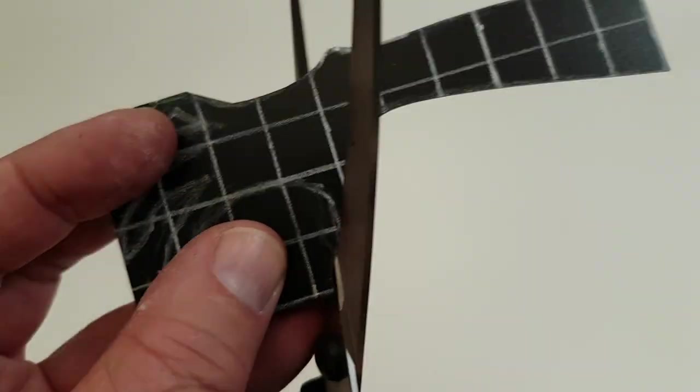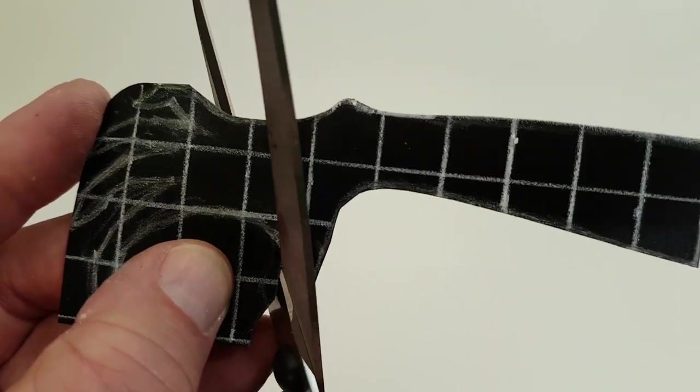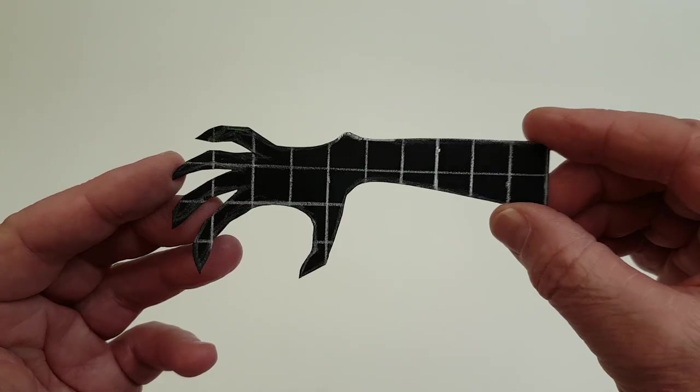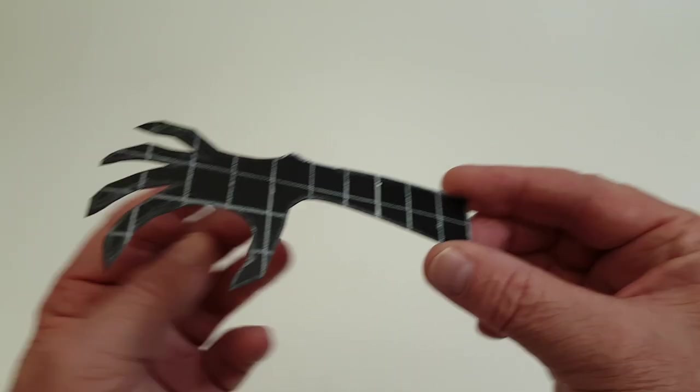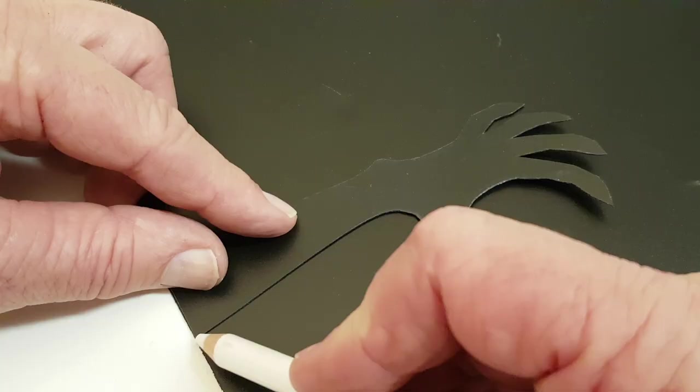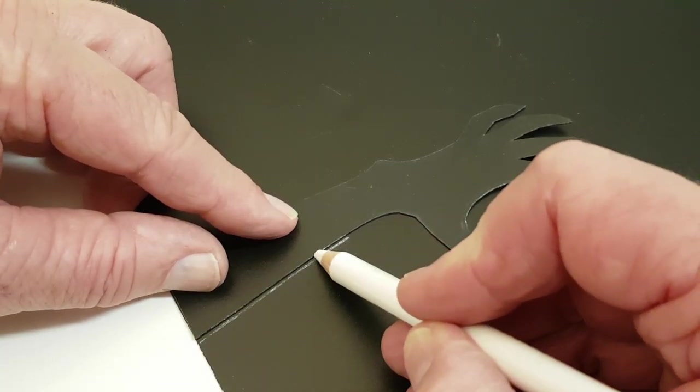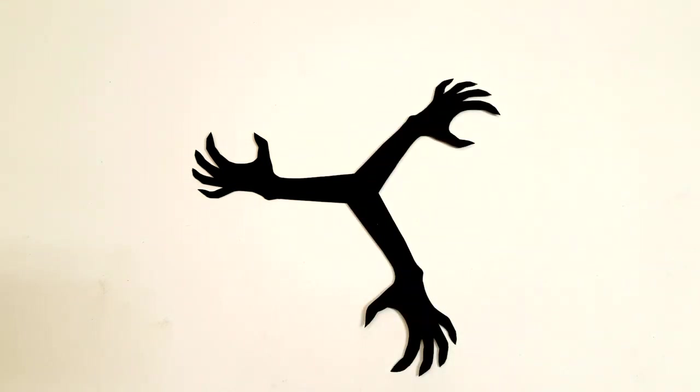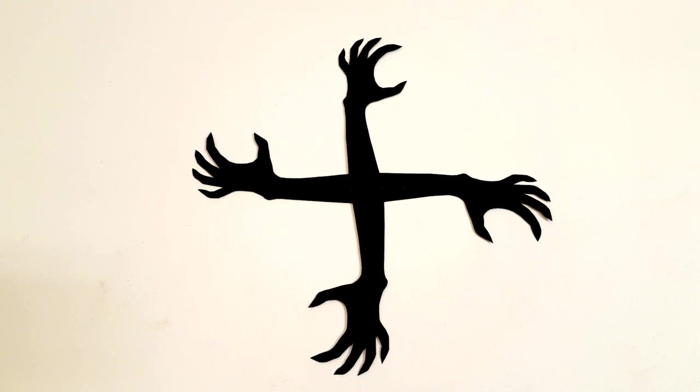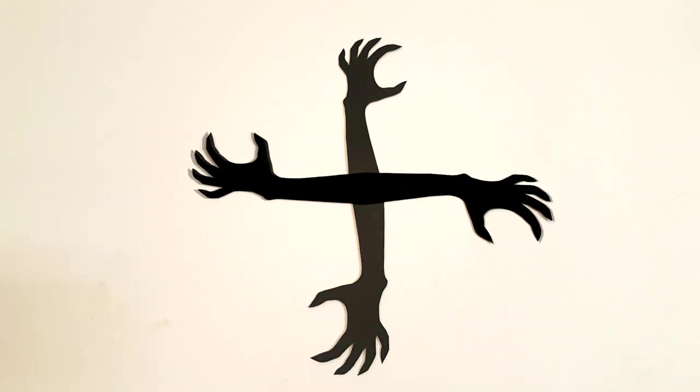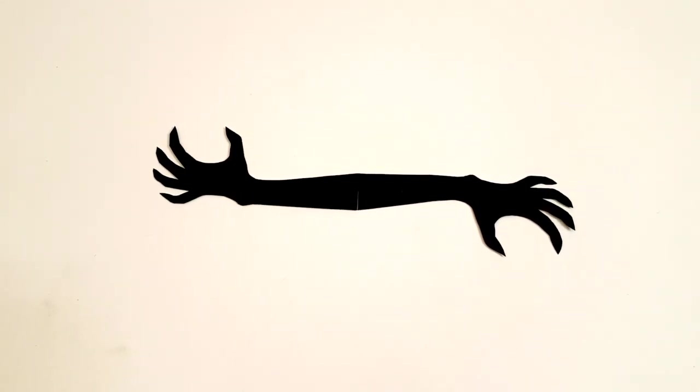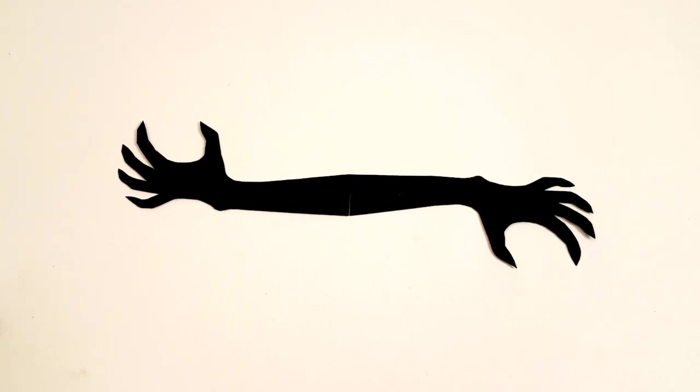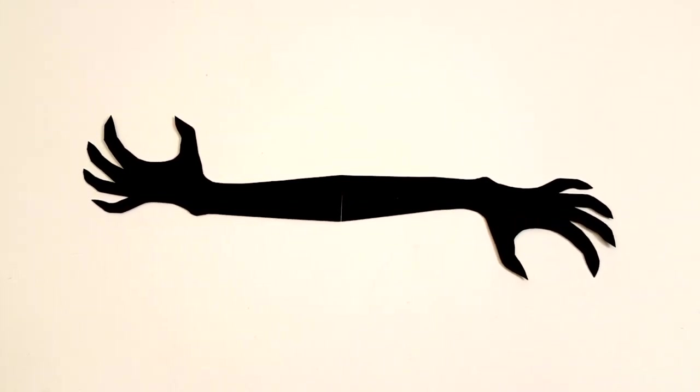Using a utility knife or scissors cut out the hand silhouette. Once you have the first one cut out use it as a template to trace around for additional silhouettes. You can create either a two three or four hand silhouette. The more hands the more frequently the hand shadow will appear. For the purpose of this video I will be creating a two hand silhouette to cast the shadow.